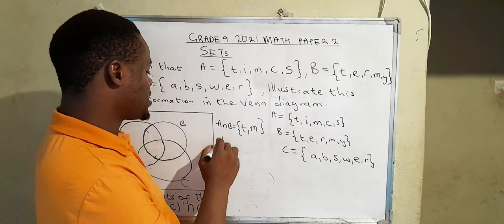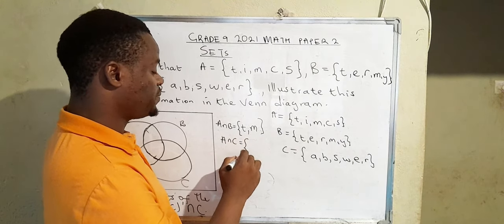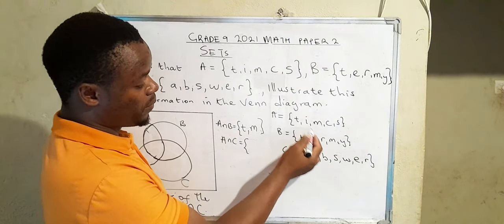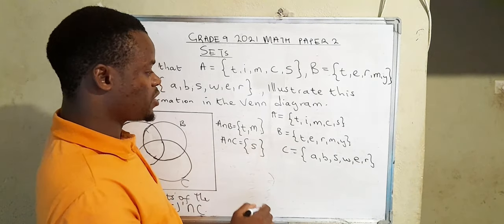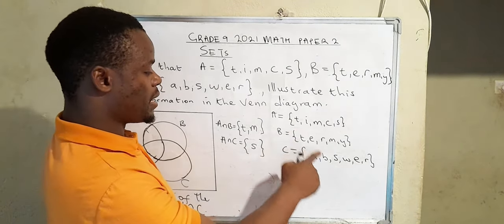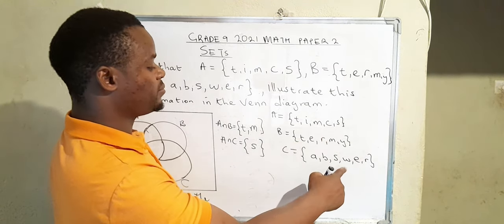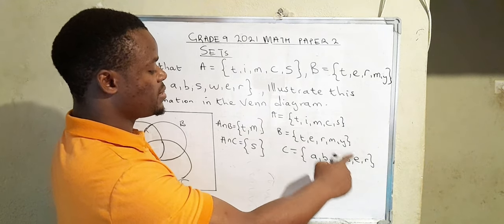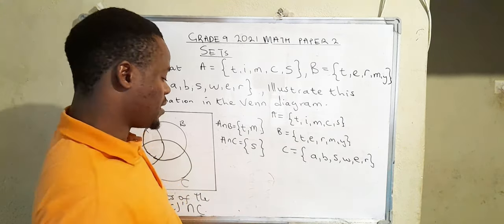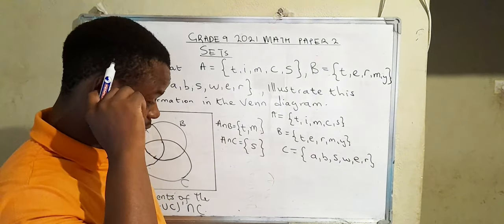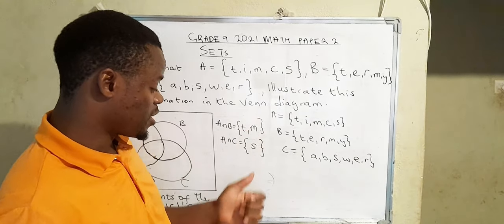Then the intersection set of A and C. We simply check what's common in these two sets. S is actually common. I is there, there's no I here. M, there's no M here. C, there's no C here. S is there. So the intersection set of A and C is actually {S}.